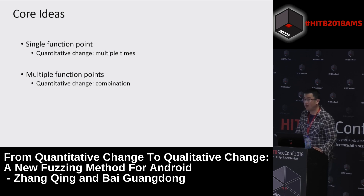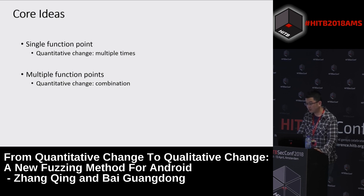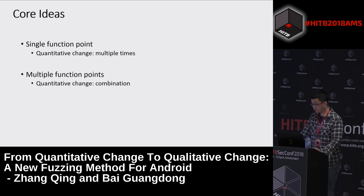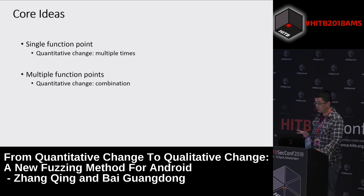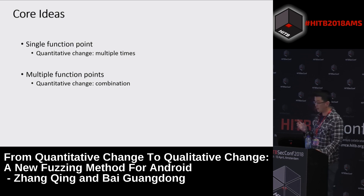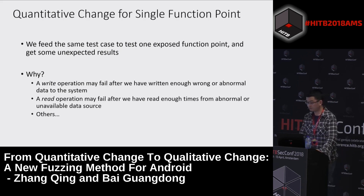This perspective has two core ideas. The first one is quantitative change when fuzzing a single function point — we fuzz the function point not just once but multiple times. The second is quantitative change when fuzzing multiple function points — we call the function points in several different combinations instead of calling only one function point.